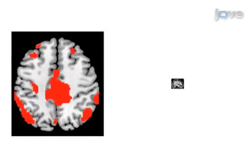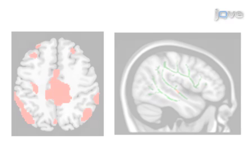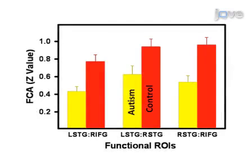In addition to the basic brain activation analysis, the functional and anatomical connectivity is examined in autism and control participants. fMRI results are obtained that show reduced activation and weaker functional connectivity during social cognition in autistic subjects.